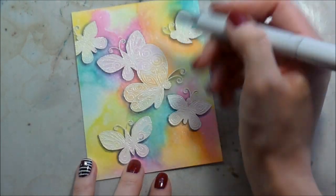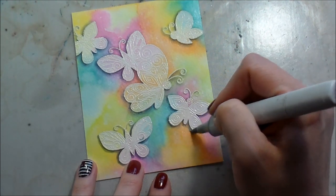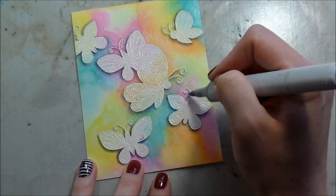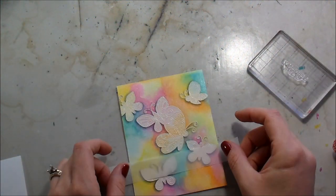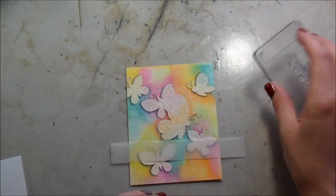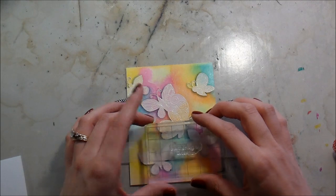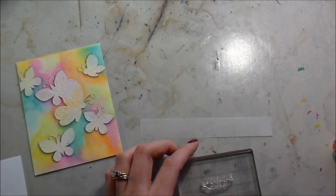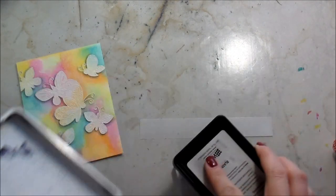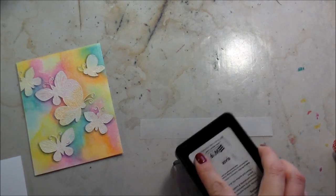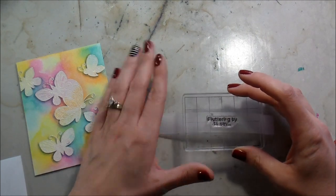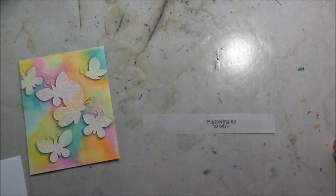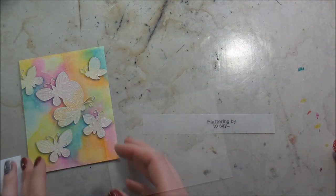They all have a little bit of color because we did the initial wash just not nearly as intense as the outside of it is. When I was stamping my butterflies down I didn't really leave myself anywhere to put a sentiment so I'm going to add it on a piece of vellum. This says just fluttering by to say and then you finish the sentiment on the inside which I think is really cute. I think a lot of times as card makers we forget about the inside of a card.